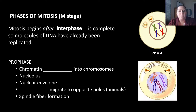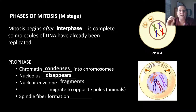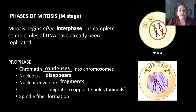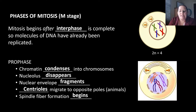In prophase, the chromatin condenses into chromosomes — they wrap around those proteins and we can actually see them. The nucleolus, which is found inside the nucleus, is going to disappear temporarily. The nuclear envelope that surrounds the nucleus is also going to fragment and break apart so the chromosomes have freedom to move. The centrioles migrate to opposite poles — this only happens in animals, as centrioles are only found in animal cells and this does not occur in plant cells. Spindle fiber formation begins here as we get everything ready to divide the cell.